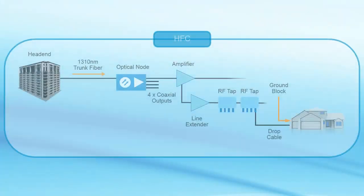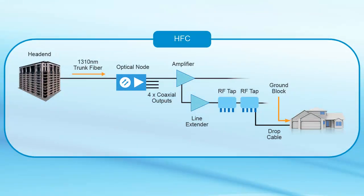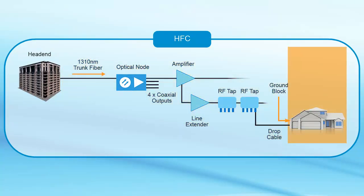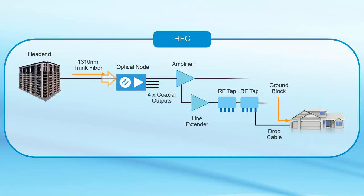Here are the four major components of the HFC cable system: the head end, fiber optic system, coaxial distribution system, and customer premises. Fiber optic cables are used to link the head end to the service area as the signal delivered at the node is unamplified, and therefore superior to a coaxial cable, which requires multiple amplifiers to cover the same distance.